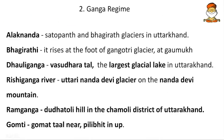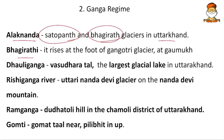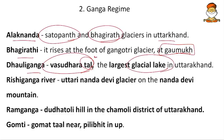Moving to the Ganga regime in more detail. Alaknanda originates from the Satopanth and Bhagirath glaciers in Uttarakhand — remember these two glaciers. Bhagirathi rises at the foot of Gangotri glacier at Gomukh — remember Gomukh, where there was a very severe landslide three to four years ago. Dauli Ganga originates at Vasundhara Tal — 'Tal' means a lake — the largest glacier lake in Uttarakhand.